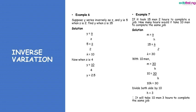Example 7: if it took 15 men 2 hours to complete a job, how many hours would it take 10 men to complete the same job? We represent it as m equals k over h. Substituting: 15 equals k over 2, so k equals 30. For 10 men: 10 equals 30 over h. Cross multiplying: 10h equals 30, so h equals 3. It will take 10 men 3 hours to complete the same job.